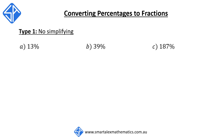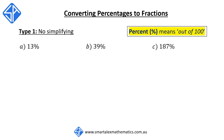Let's start off with the first type. This is the simplest because it involves no simplifying. The word percent means out of 100. So for question A, when we have 13%, this is the same as saying 13 out of 100. We can write this as a fraction as 13 over 100. And because this can't be simplified, 13% is equal to 13 over 100.